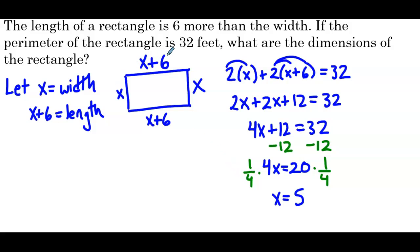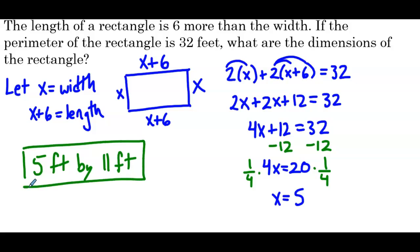The question asks what are the dimensions of the rectangle, so we want both the width and the length. Our width is 5 feet and our length is 11 feet — those are the dimensions. It's always important with any word problem to go back and read, making sure you're giving the answer they're looking for. This also gets back to why it's so important to have a well-defined let statement, so that we don't forget whether x was our length or our width. We just look back at our let statement and it's right there.